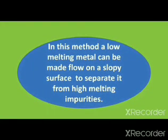Liquation: In this method, a metal with a lower melting point can be made to flow on a sloping surface to separate it from high melting impurities. The furnace is shown. The base of the furnace provides heat to the metal. You can see the sloping surface of the furnace on which the metal is liquefied and purified.